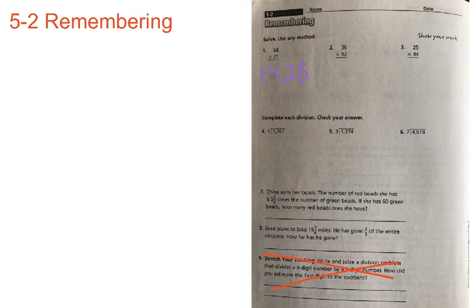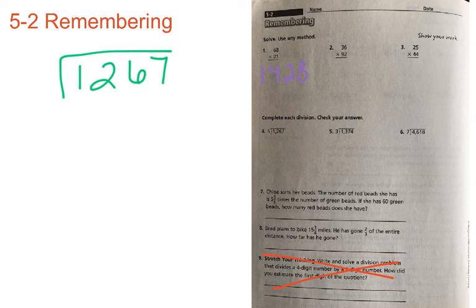In numbers 4 through 6, it says complete each division and check your answer. We're going to use multiplication to be checking our answers. Number 4, we have the number 1,267 and we are dividing that by 5.